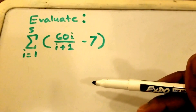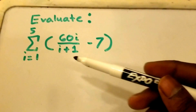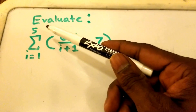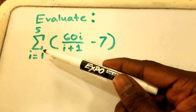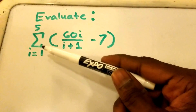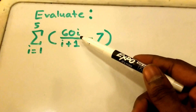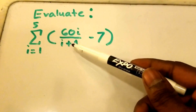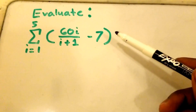Hey guys, welcome to this video on summation notation. Here we have our problem: we want to evaluate the summation from i equals 1 to 5 of 60 times i divided by i plus 1, minus 7.